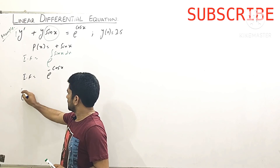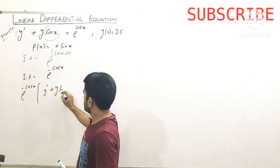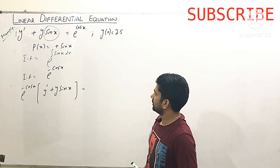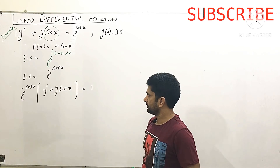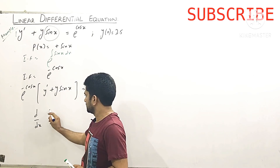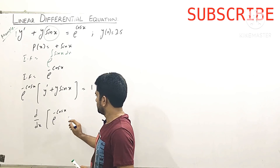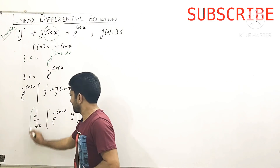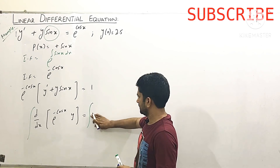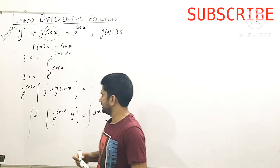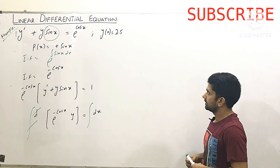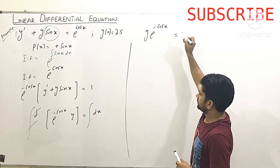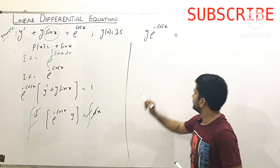We multiply the integrating factor e^(-cos x) by the equation: e^(-cos x)·(y' + y·sin x) = e^(-cos x)·e^(cos x). On the right-hand side, the exponents cancel and we get 1. The left-hand side closes as d/dx[e^(-cos x)·y] = 1. Taking the integral on both sides, the d and integral cancel, giving y·e^(-cos x) = x + C.